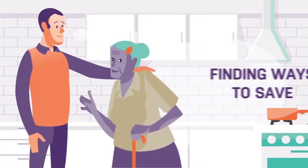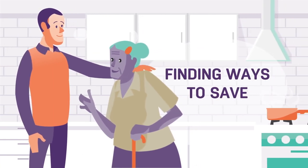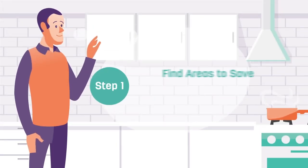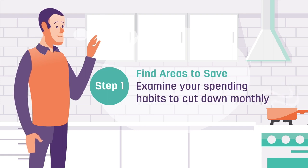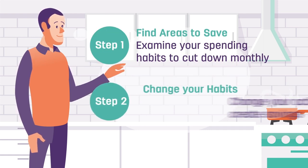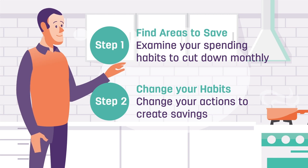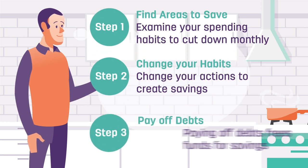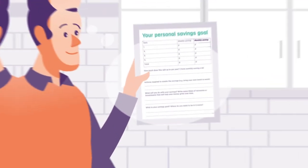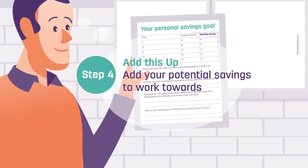It's important to make saving an important part of your life. Without extra money, this feels like an impossible task, but if you examine your spending habits, you can identify areas to cut down every month. You will need to change these spending habits — like bringing your own lunch to work, for example — in order to free up money for saving. Paying off debts also makes more money available.